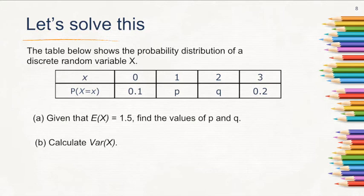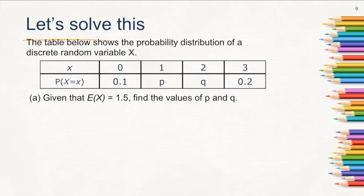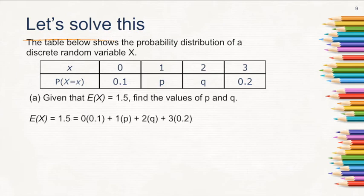Now let's solve a new problem. A table shows the probability distribution of a discrete random variable x. Part A: given that E(x) equals 1.5, find the values of p and q. Since there are two unknowns, we use a system of equations. From the expected value formula: 1.5 = 0×0.1 + 1×p + 2×q + 3×0.2, which simplifies to p + 2q = 0.9.